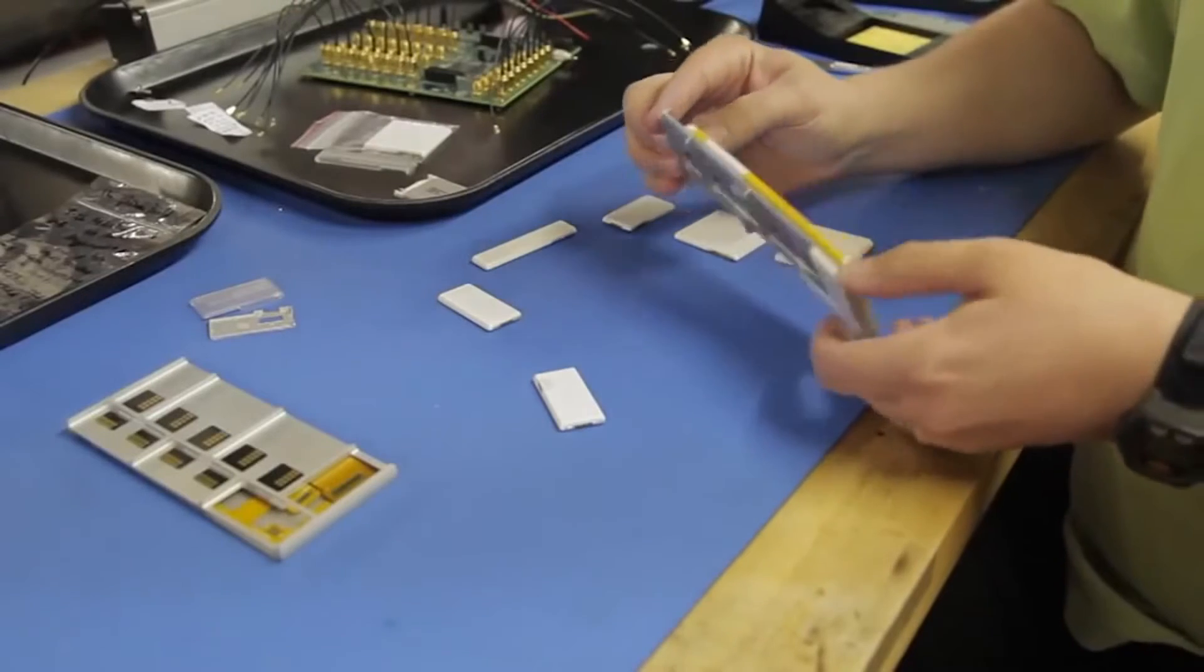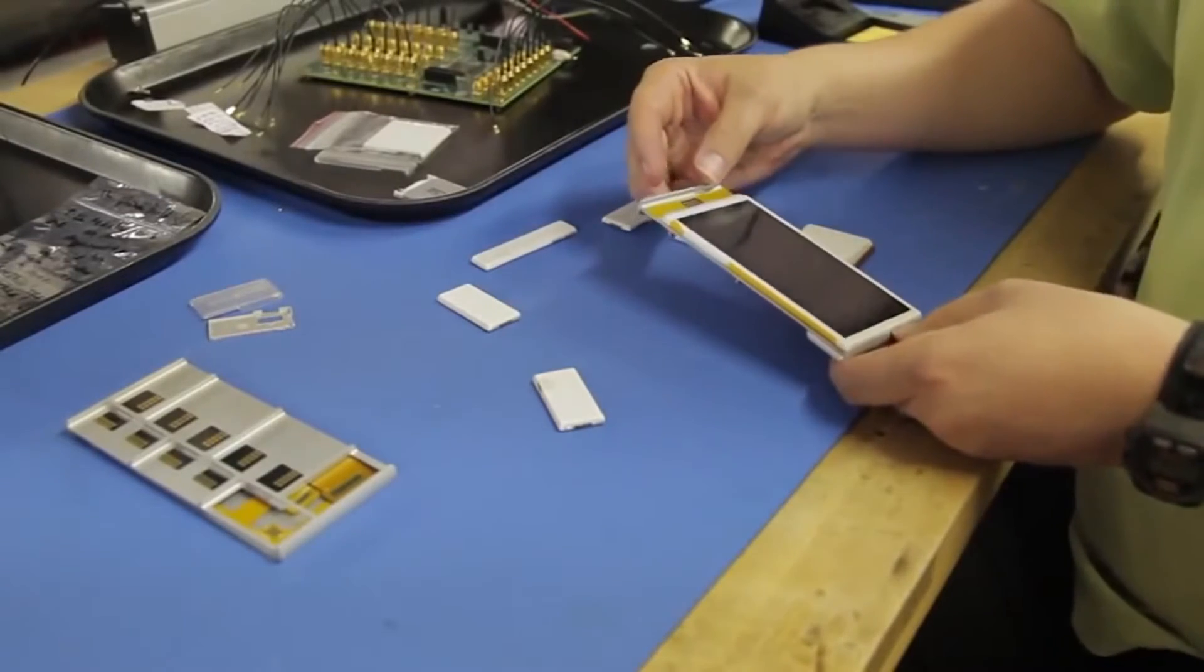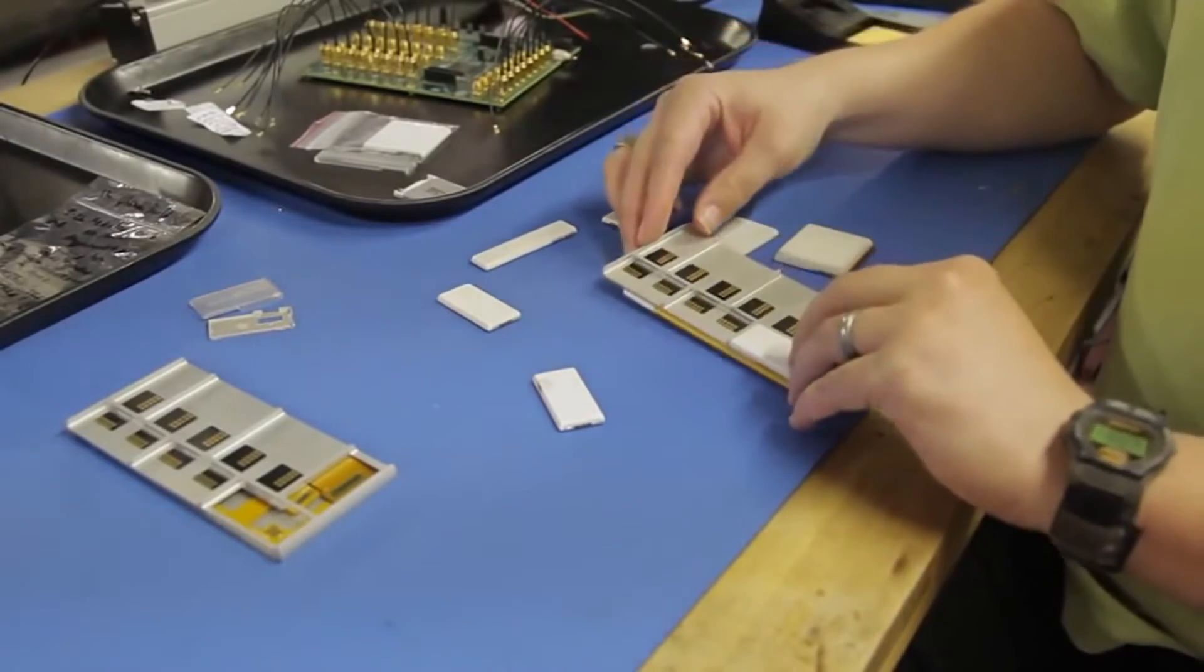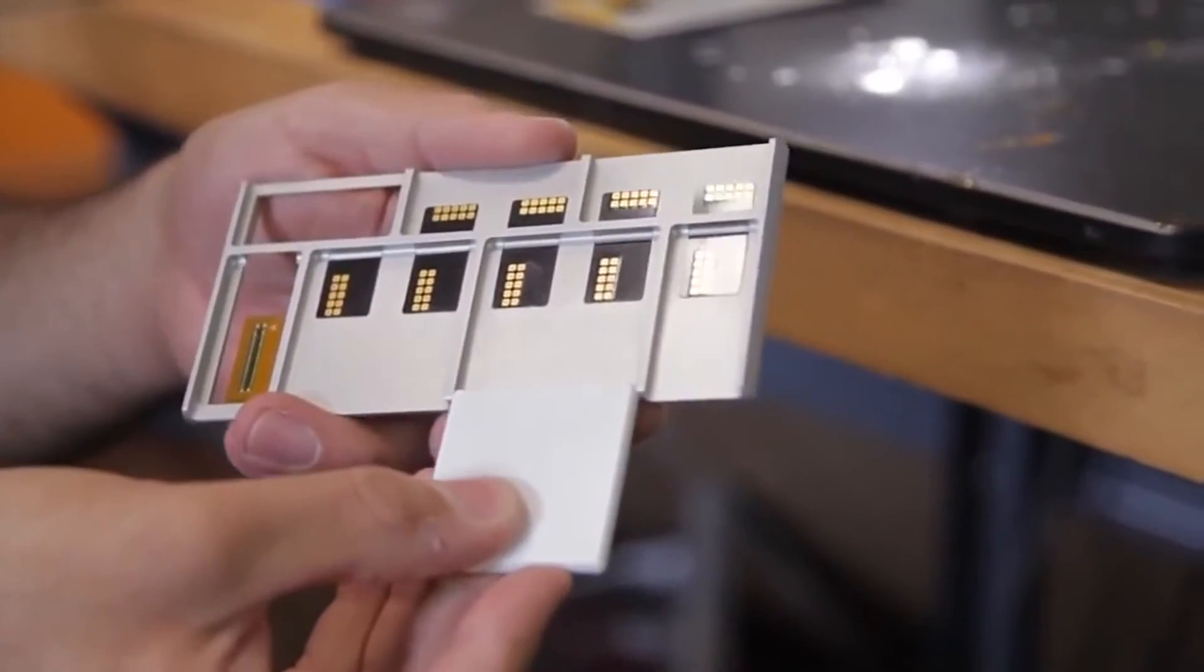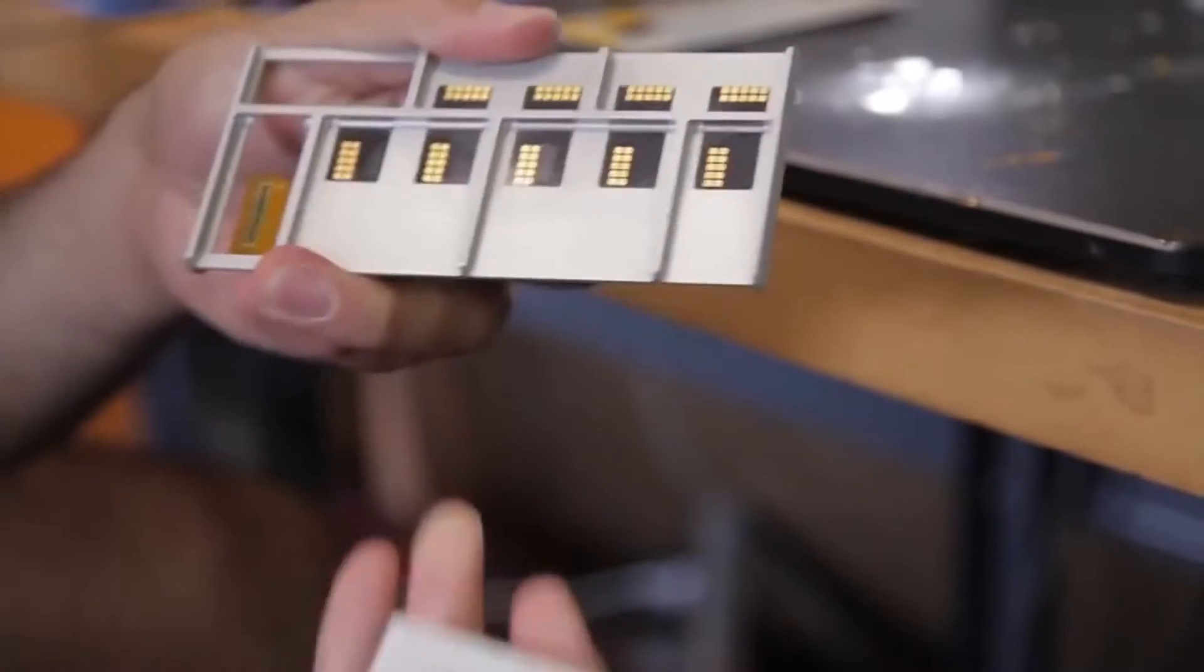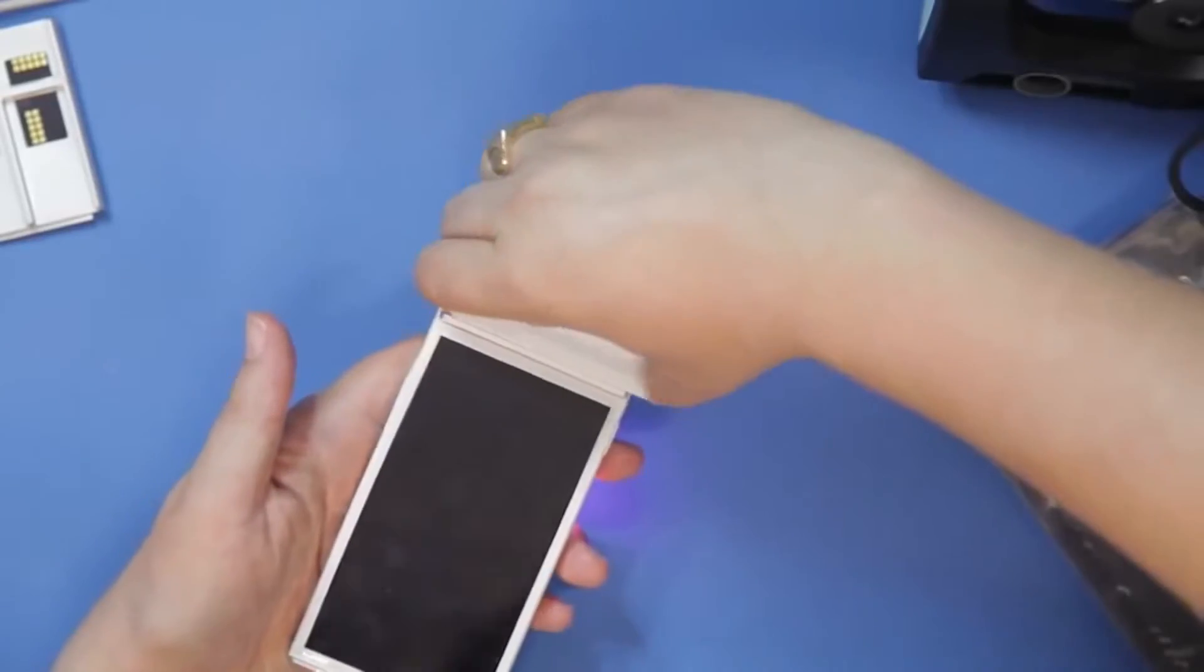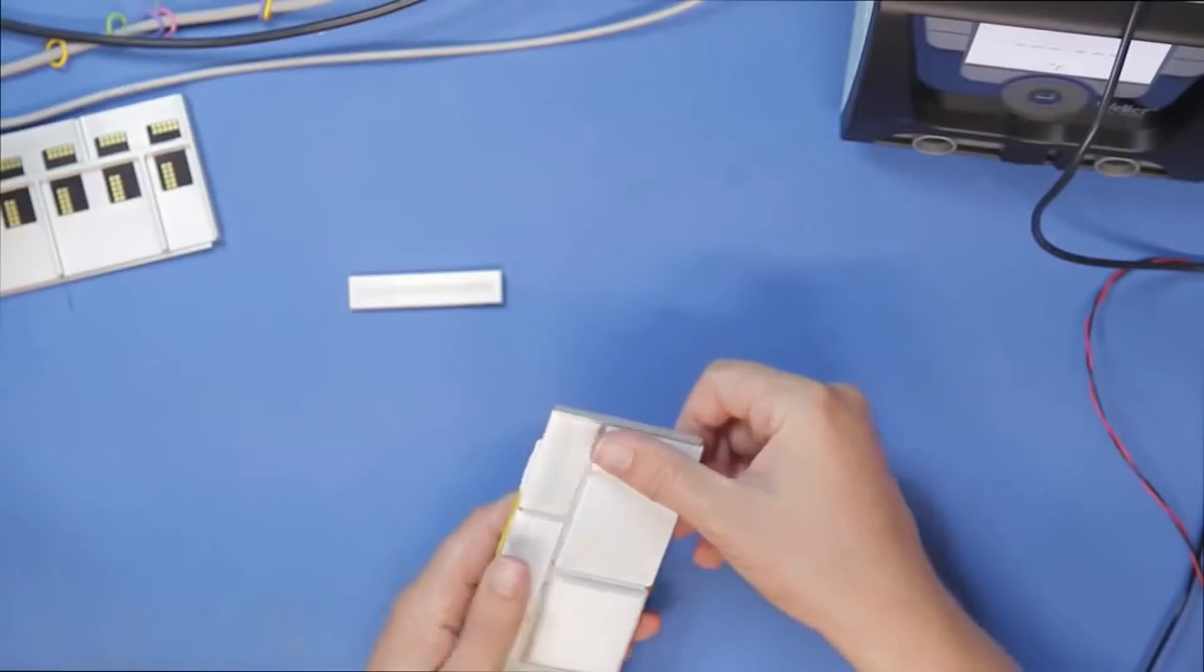Here we have the phone, the first prototype of the Ara phone. We've made some mechanical improvements to get the connectors to fit more reliably. What we have today is an LED module, battery, the application processor, loudspeakers and a USB charge port.